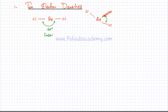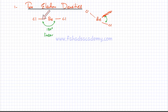So this is the first scenario: if there are two electron densities, one on each side, the shape is linear and the bond angle is 180°.